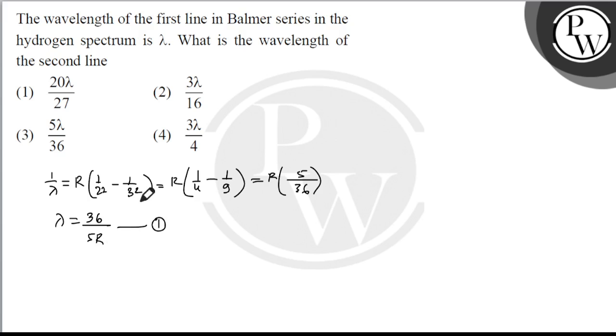For the second line, N key value is 4. So 1 upon lambda dash is equal to R into 1 upon 2 square minus 1 upon 4 square, that is equal to R into 1 upon 4 minus 1 upon 16.